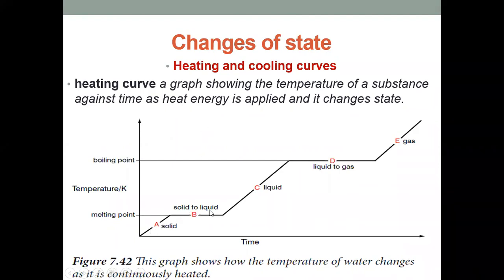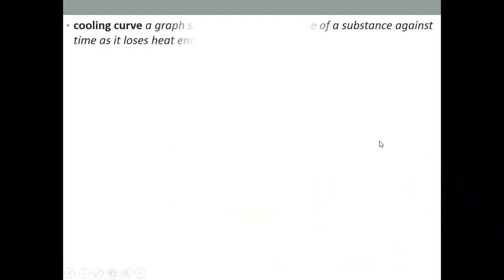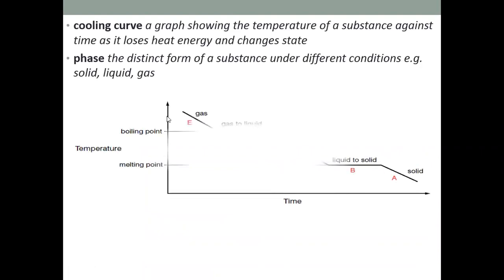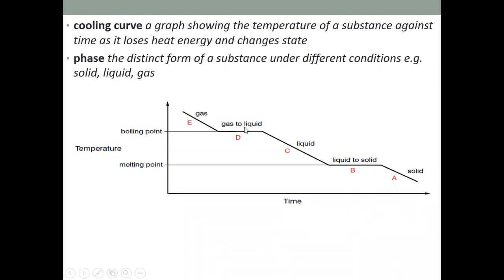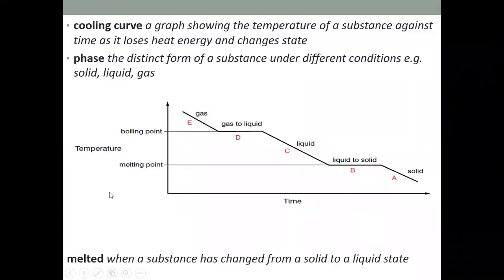When cooling an object, it goes from gas back to solid. On the heating curve: the boiling point of water is where liquid changes to gas, the melting point is where solid changes to liquid, and the freezing point of water is 0°C. Melting is when a substance changes from solid to liquid.